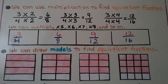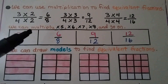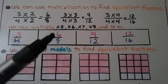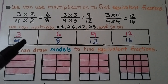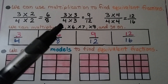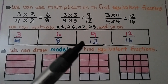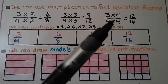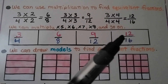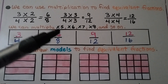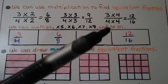We can use multiplication to find equivalent fractions. We have three-fourths. We multiply the numerator and denominator by the same number. Using two, we get six-eighths. Multiplying by three gives nine-twelfths. Multiplying by four gives twelve-sixteenths. And we can multiply by five, six, seven, eight, and so on to make even more equivalent fractions.